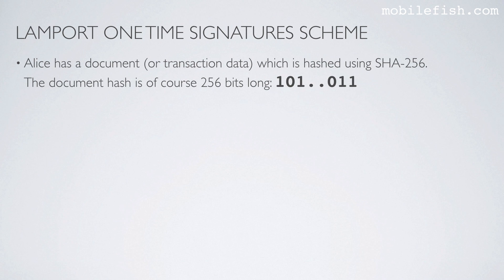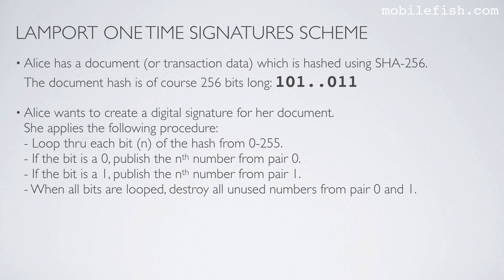Alice has a document or transaction data which is hashed using SHA-256. The document hash is 256 bits long. I am only showing the first 3 bits and the last 3 bits. Alice wants to create a digital signature for her document. She applies the following procedure: loop through each bit N of the hash from 0 to 255. If the bit is a 0, publish the Nth number of pair 0. If the bit is a 1, publish the Nth number of pair 1.